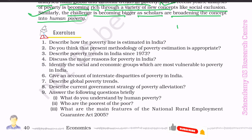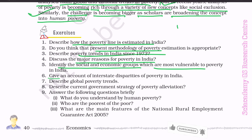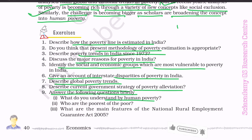Exercises: 1. Describe how the poverty line is estimated in India. 2. Do you think that the present methodology of poverty estimation is appropriate? 3. Describe poverty trends in India since 1973. 4. Discuss the major reasons for poverty in India. 5. Identify the social and economic groups most vulnerable to poverty in India. 6. Give an account of inter-state disparities of poverty in India. 7. Describe global poverty trends. 8. Describe current government strategy of poverty alleviation. 9. Answer briefly: What do you understand by human poverty? Who are the poorest of the poor? What are the main features of the National Rural Employment Guarantee Act 2005?